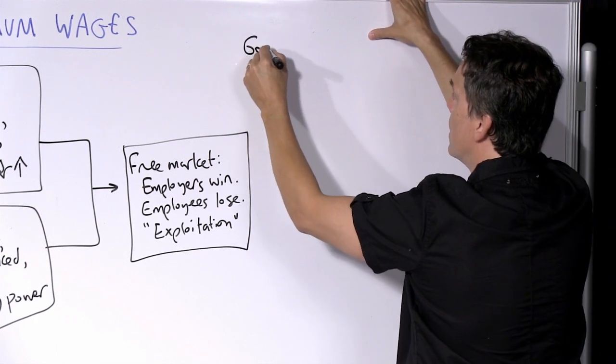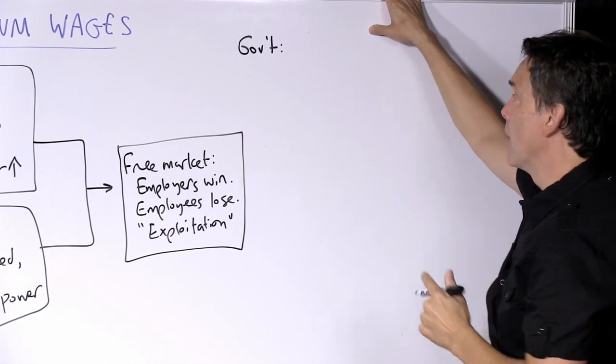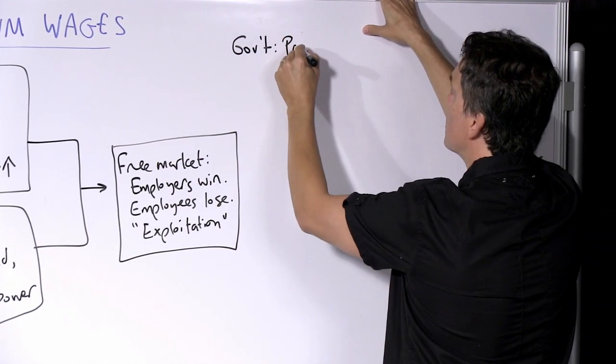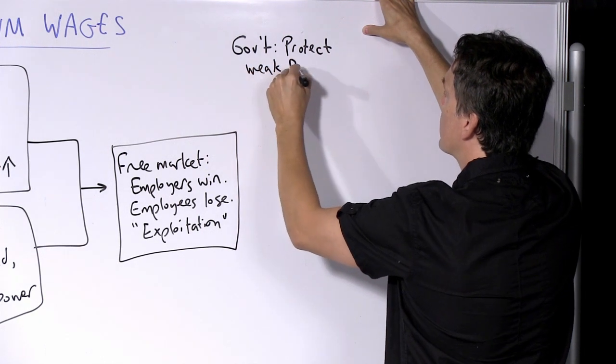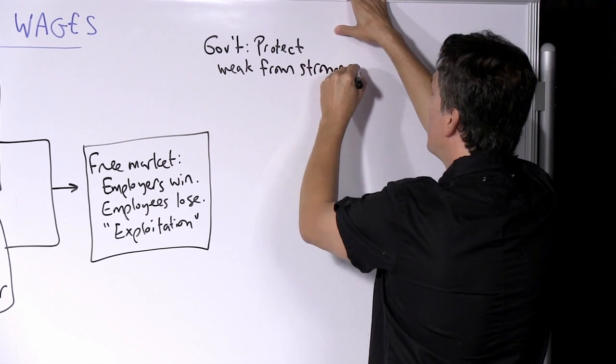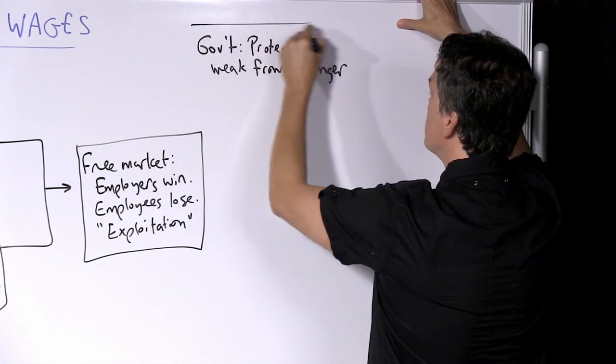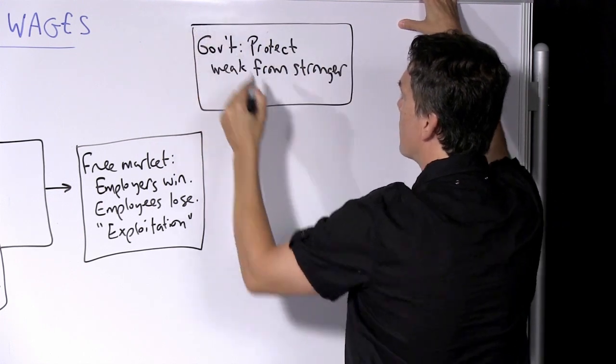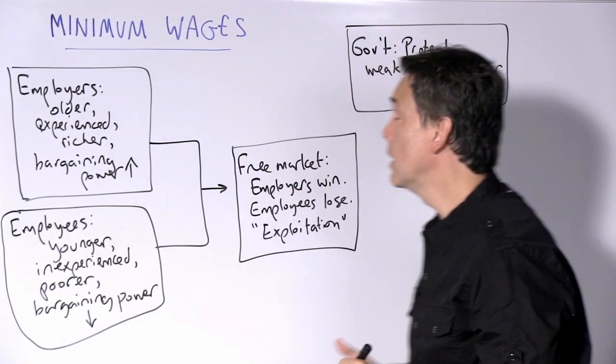And of course this position will then say that is why we need to turn to government. The government's job is to protect the weaker from the stronger. The unequal power in the marketplace leads to all kinds of unfairnesses, and so what we need is to have the government use its power appropriately to address those power imbalances.